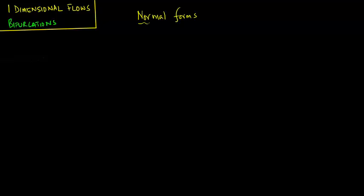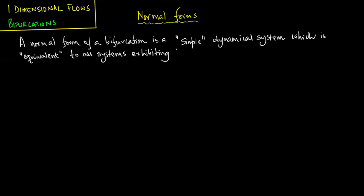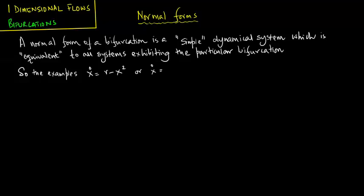This lecture is on the topic of normal forms. A normal form of a bifurcation is a simple dynamical system which is equivalent to all systems exhibiting that particular bifurcation. The examples x_dot = r - x² or x_dot = r + x² are actually representative of all saddle node bifurcations.